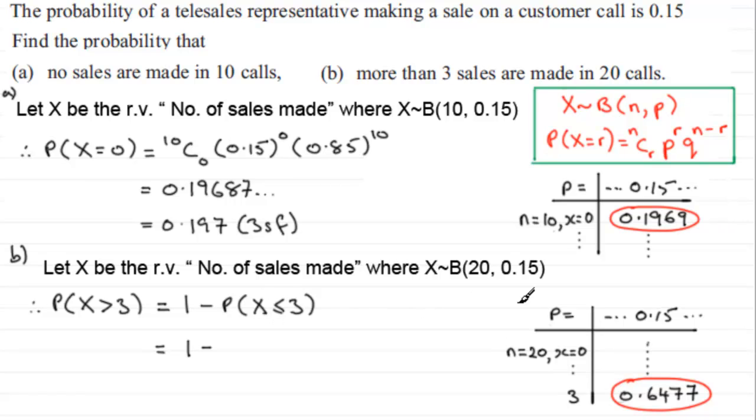So it saves us working out all the individual probabilities. So we've got 1 minus 0.6477, and if you work that out you end up with 0.3523.